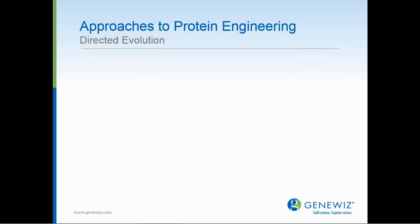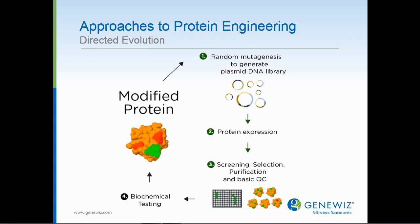Now let's switch gears and talk about the second commonly used method within a protein engineering pipeline: directed evolution. Unlike the rational approach, in directed evolution, one does not necessarily have to rely on prior knowledge of a protein structure and function. The general steps are summarized here: first, random mutagenesis; second, protein expression; third, purification, selection, screening, basic QC; and finally, biochemical testing.